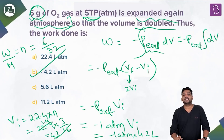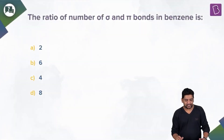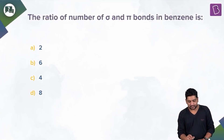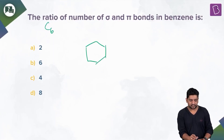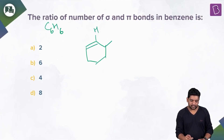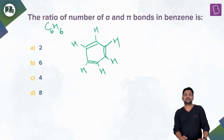Next question: the ratio of sigma to pi bonds in benzene. Benzene is C₆H₆. Let's draw the normal structure — forgetting resonance — a six-membered ring where each carbon is attached to one hydrogen.